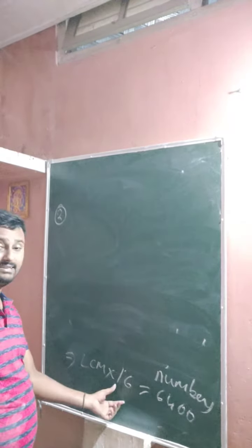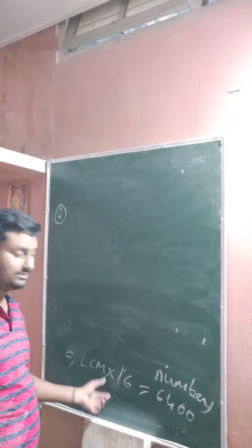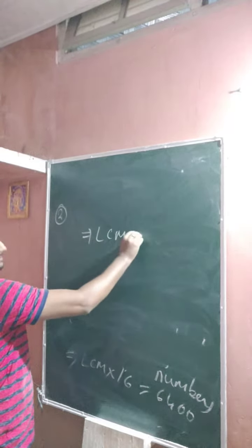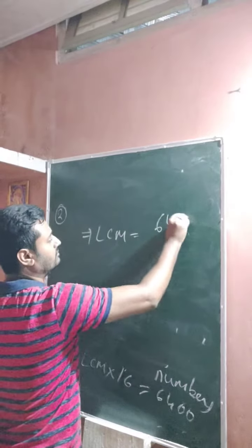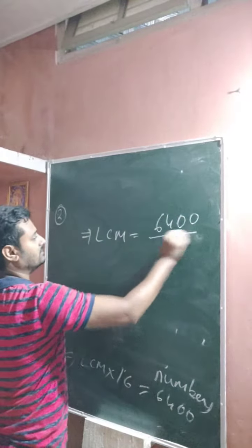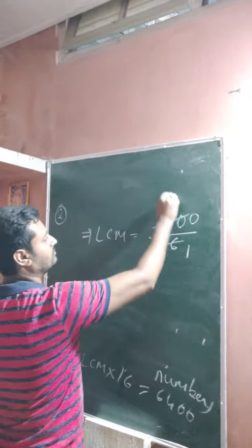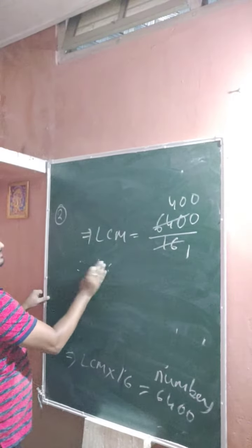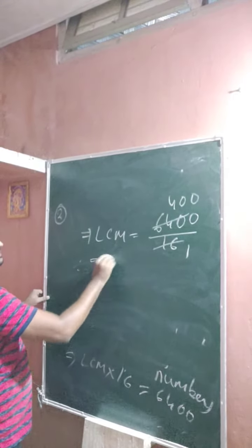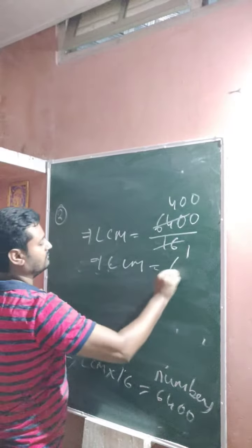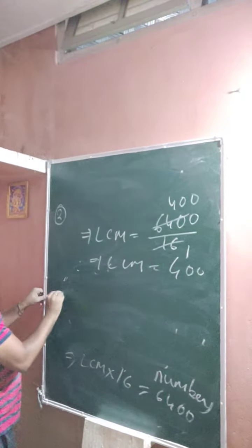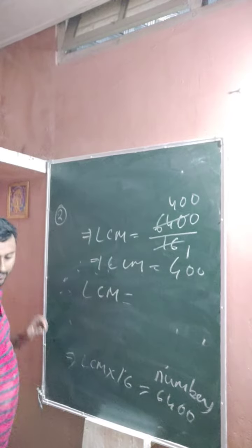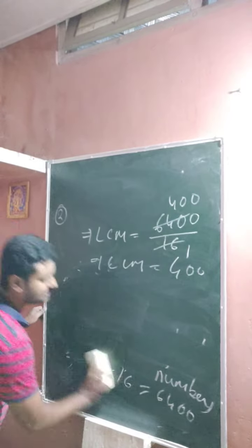Rearranging, LCM equals 6400 divided by 16, which gives LCM equal to 400. So the LCM is 400. Therefore, LCM equals 400.